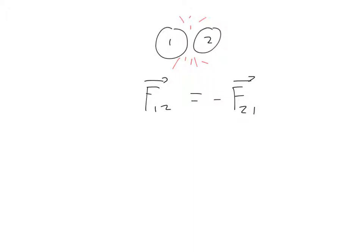Now, what will be the duration of the force between the two? We don't know necessarily how long that is, but we should realize that the amount of time that object 1 is in contact with object 2 is exactly the same amount of time as object 2 is in contact with object 1. It seems impossible that 1 could touch 2 but 2 not touch 1. So those durations should be the same.